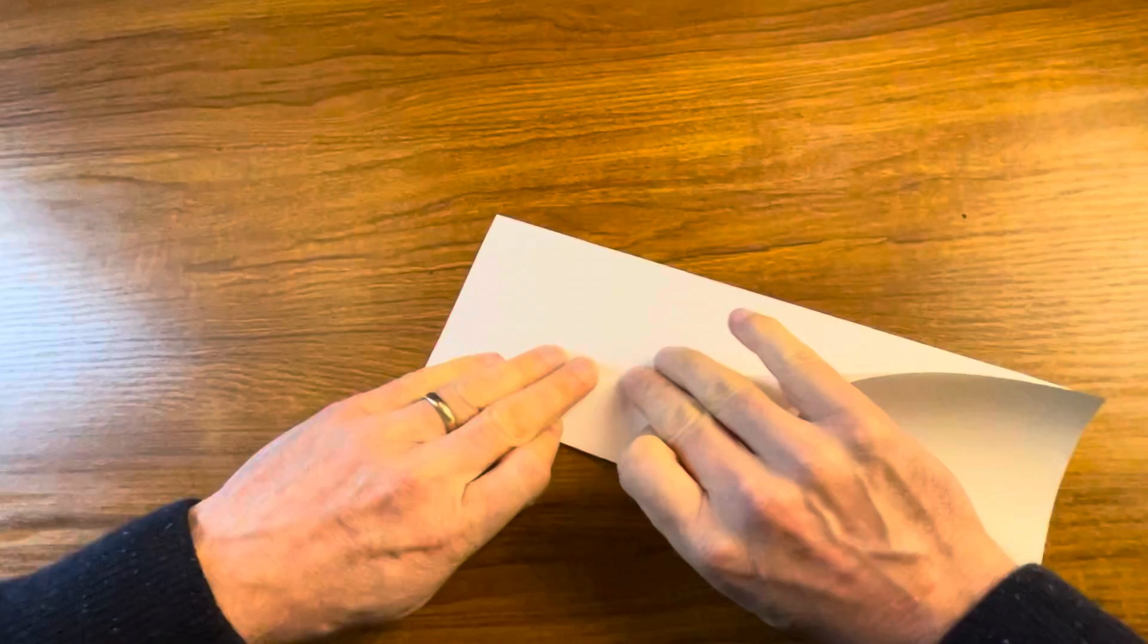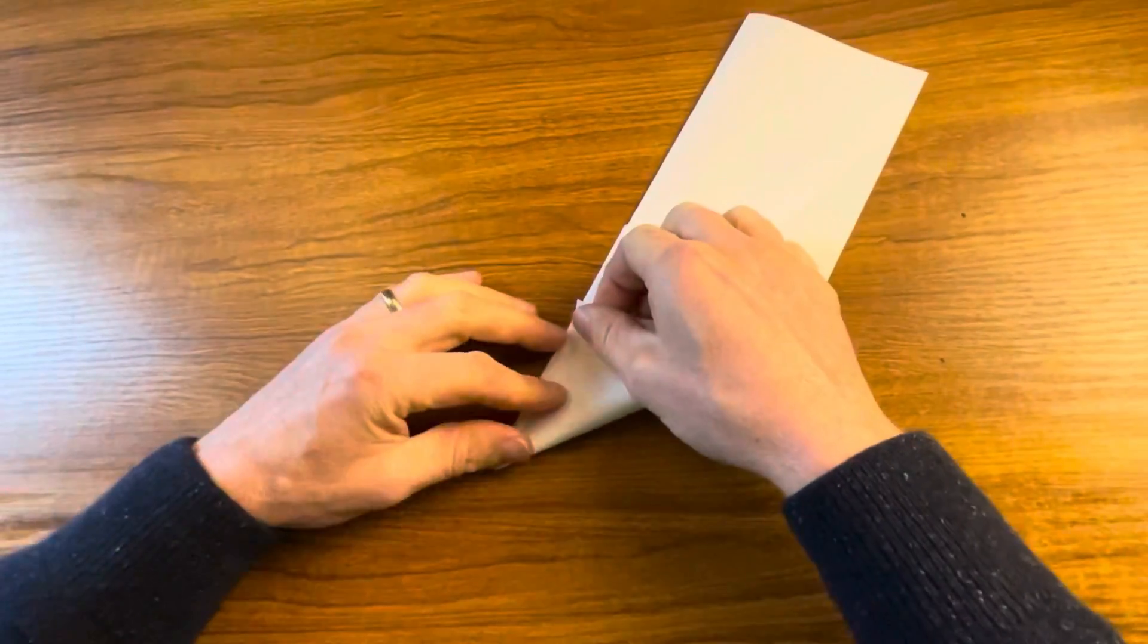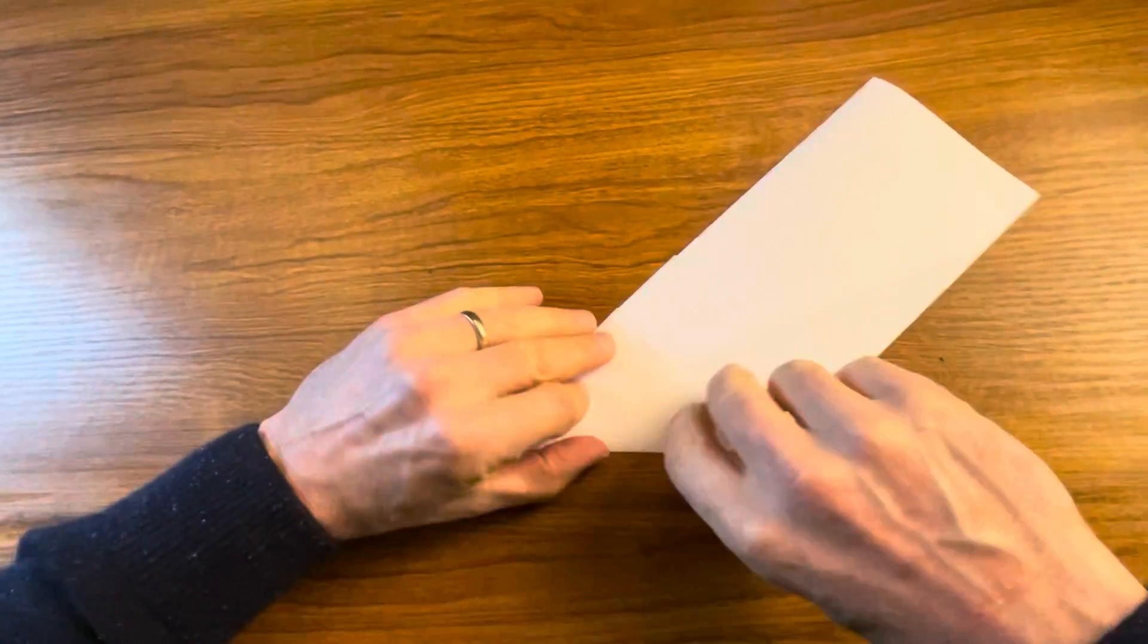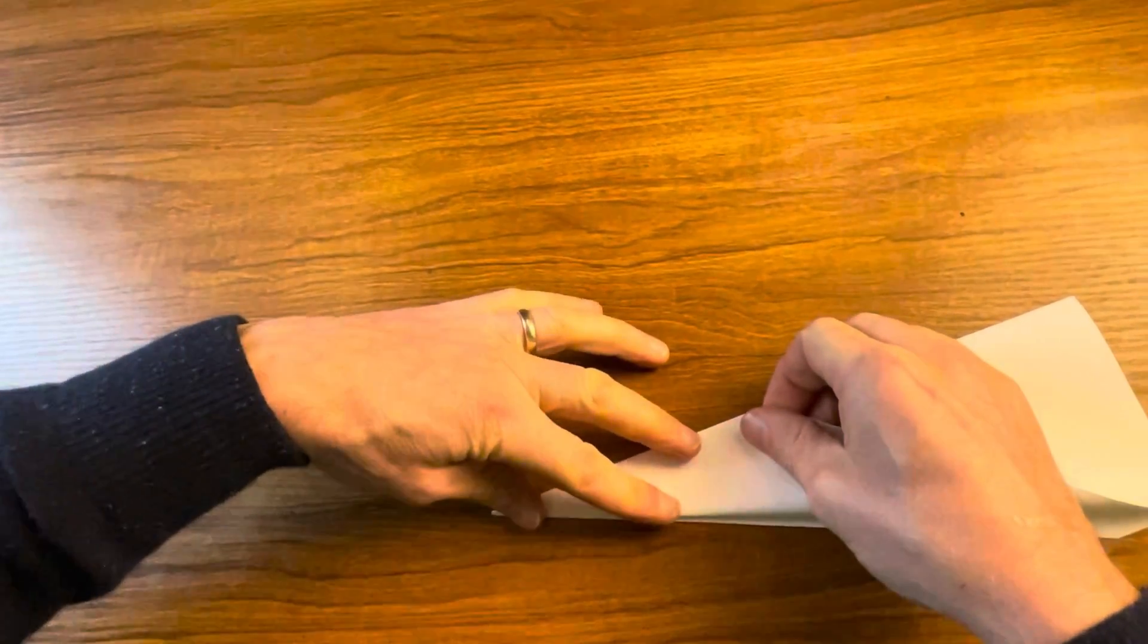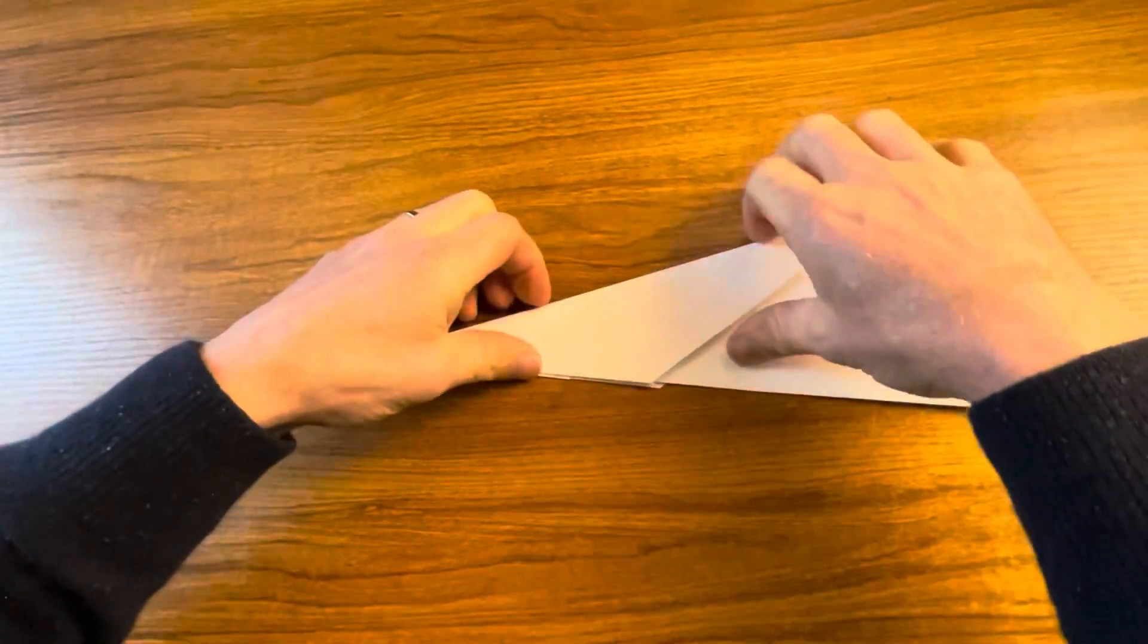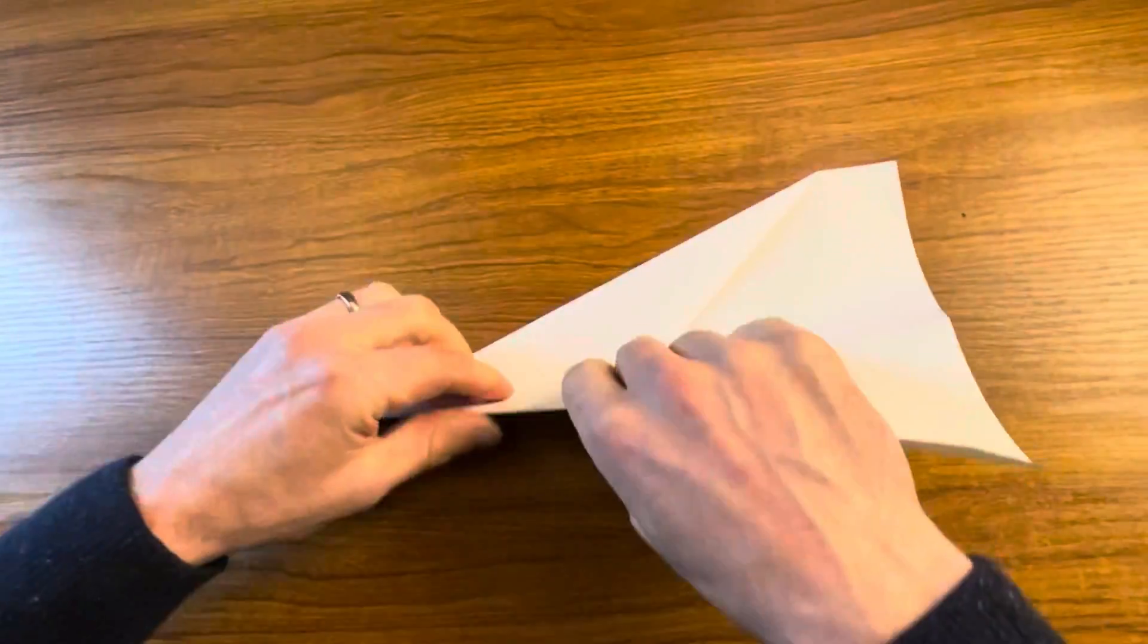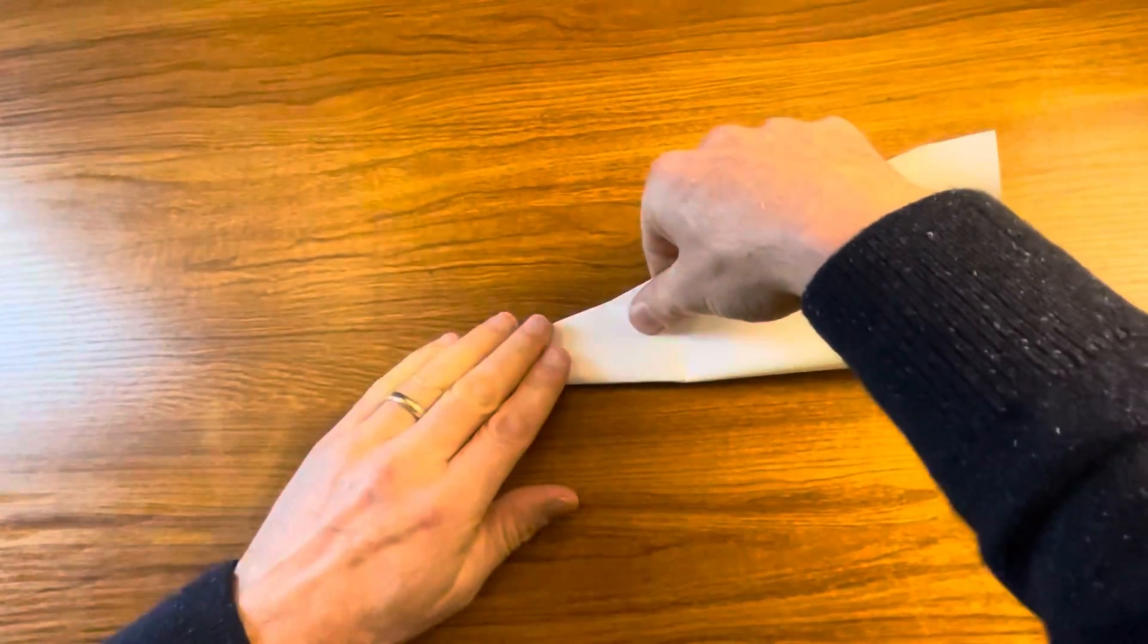Then we're going to fold it back again like so, keeping it nice and straight. Now this is the simplest plane design. I think everybody should be able to make this one. So now I've done that with that side, I'm going to turn it over. Fold this back once to make that triangle, then fold it back again to make another triangle. And as you can see I'm making a point all the time.